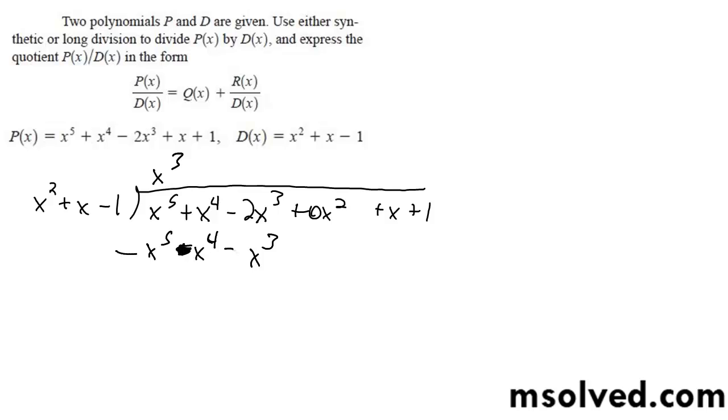This becomes negative x cubed. X squared goes into negative x cubed minus x times, so we get minus x cubed.